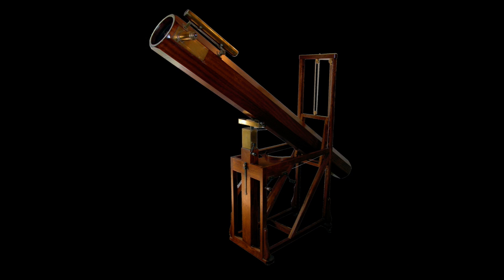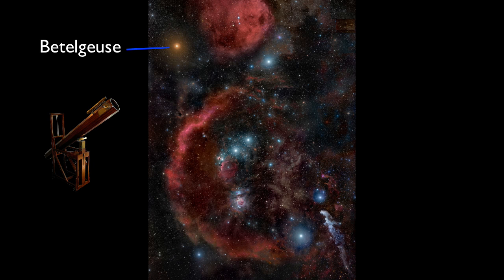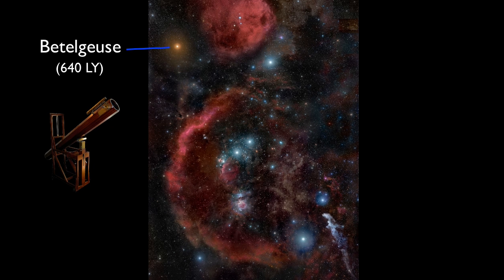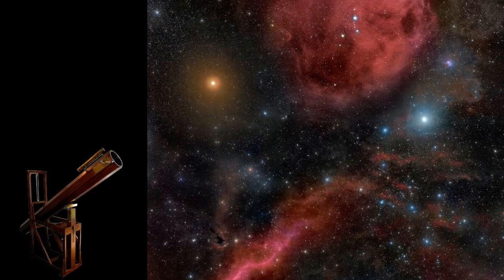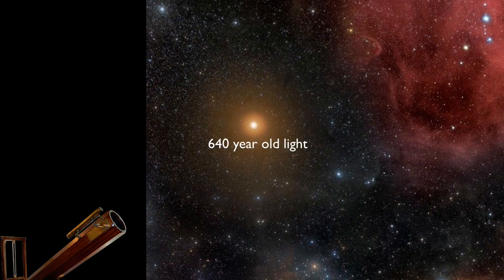In looking at a distant star, we are seeing that star as it was a long time ago. The star Betelgeuse is about 640 light years distant. This means that when we look at Betelgeuse, we're seeing light that left the star about 640 years ago.